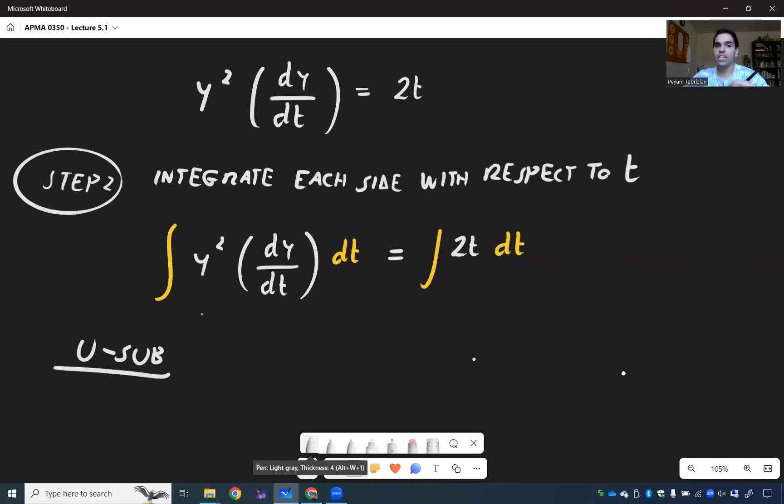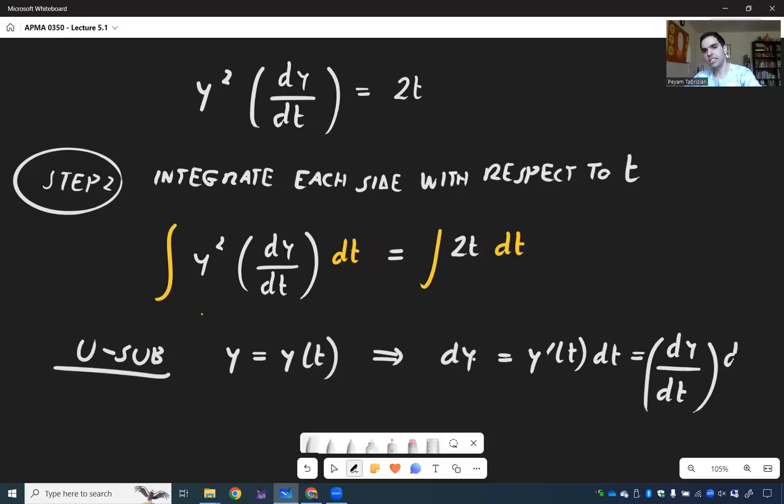So let's do a u sub. Now usually it's u equals something, but here let's do y equals a function of t, and in particular dy then becomes y prime of t dt, or more explicitly dy/dt dt.